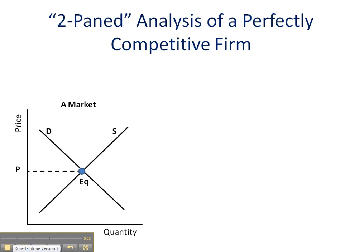Hello folks. This is a follow-up video to the previous one where I showed a two-paint analysis of a perfectly competitive firm operating in a perfectly competitive market. I started my analysis off with the firm showing a profit. I just wanted to follow up with another video showing what would happen if my initial position is the firm operating at a loss and what that looks like.